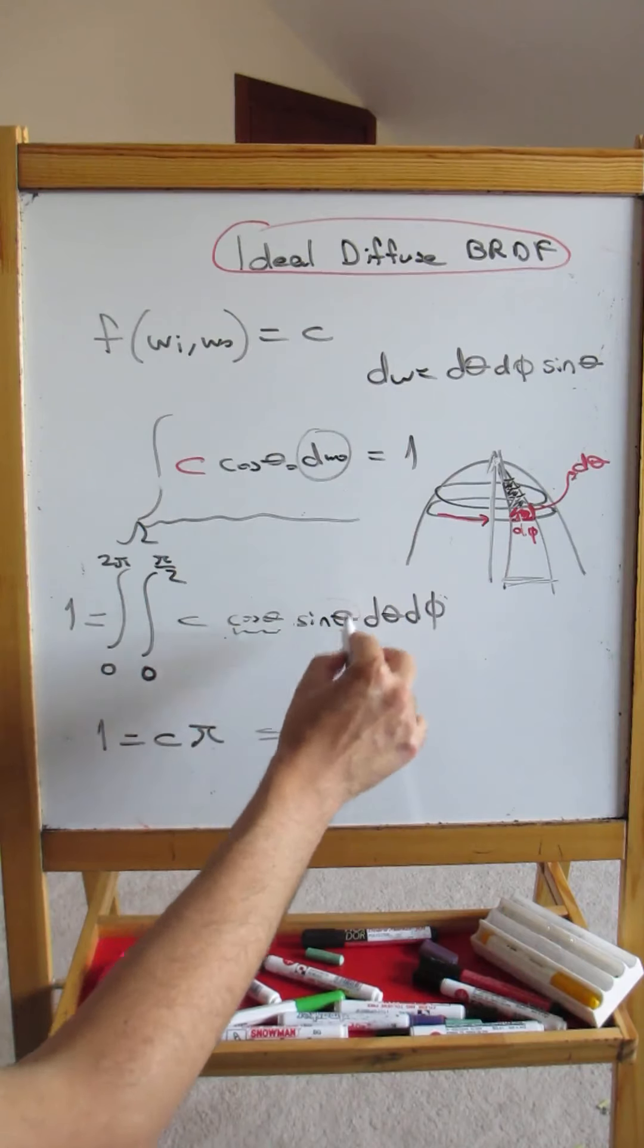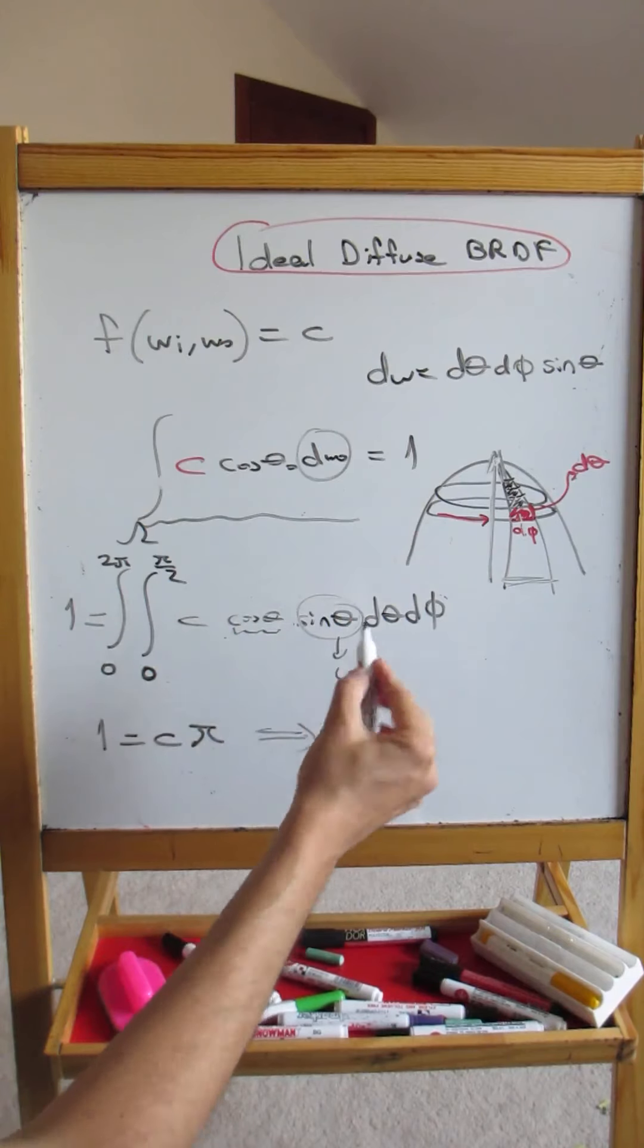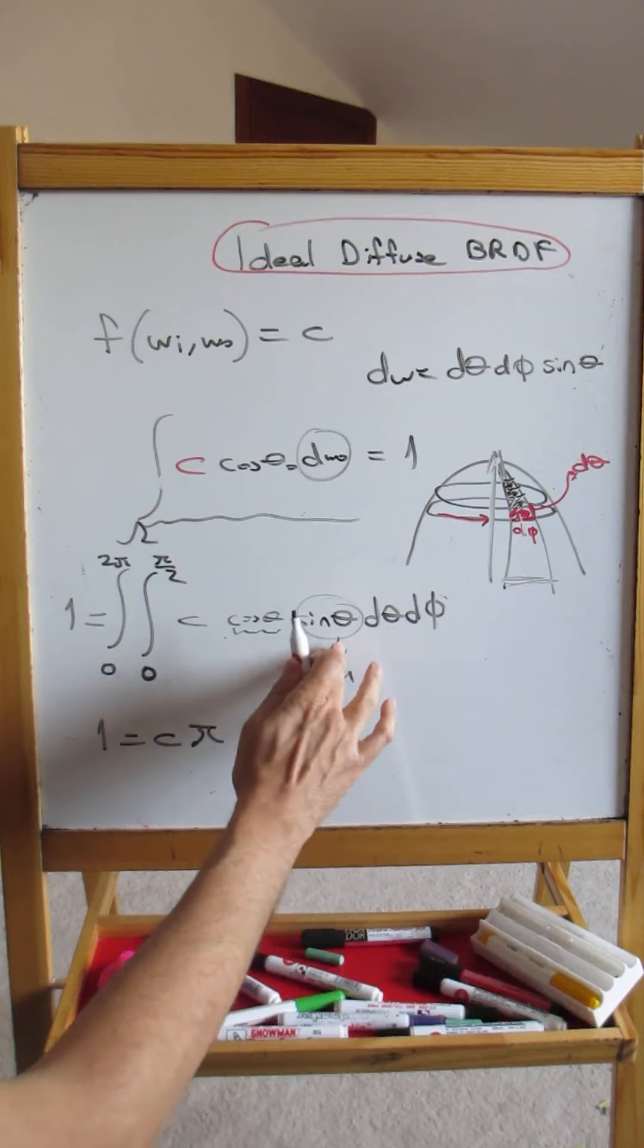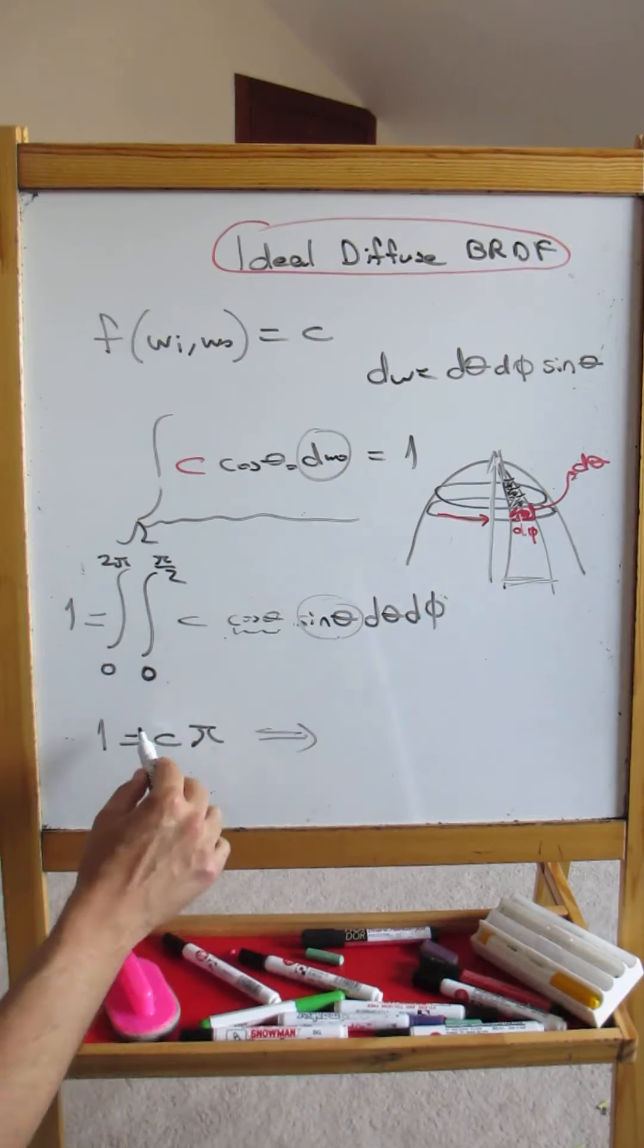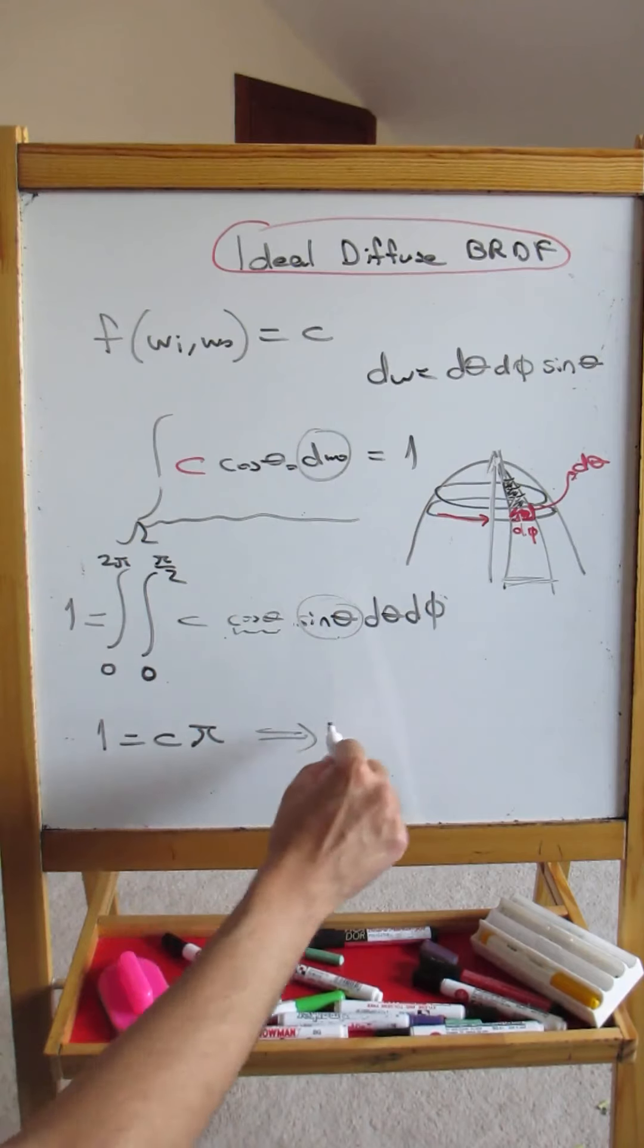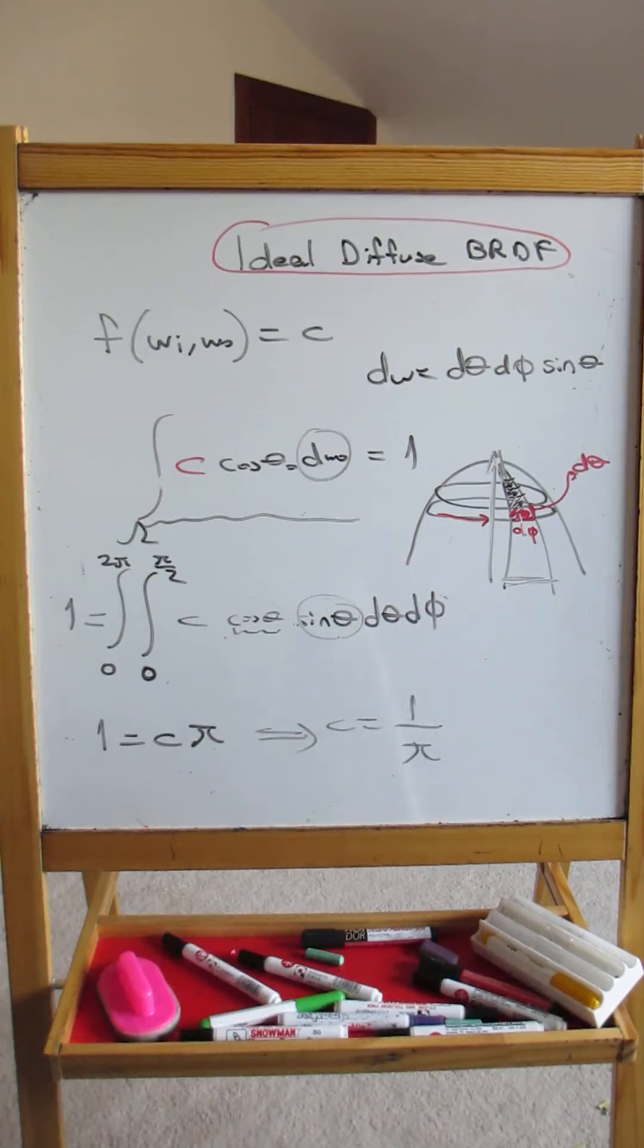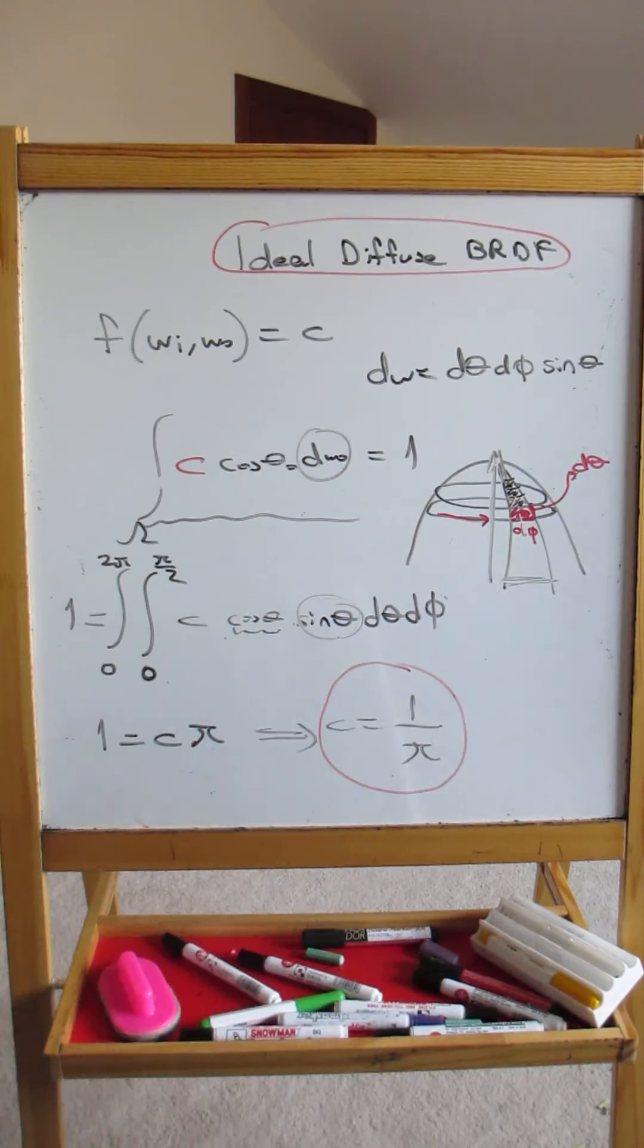So from here, but please do this integral. Please, I think to do this integral, you call, you say, sin theta, you call it u. And then by u substitution, you continue and do the steps. But for us, what is important is that c is 1 over pi. So this is the result that we want to achieve.